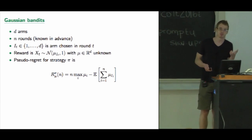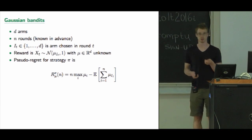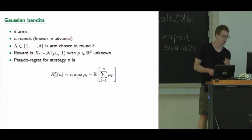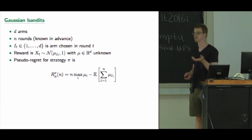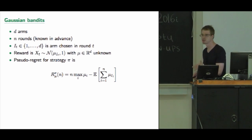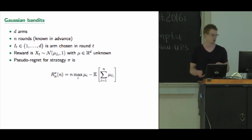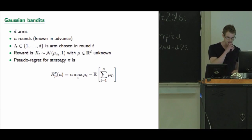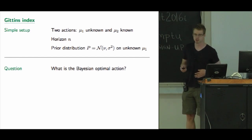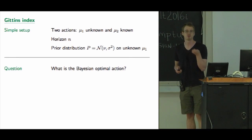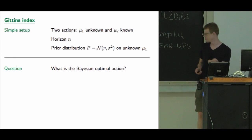The purpose of this talk is to analyze a really old algorithm, which is the Gittins index horizon algorithm — the finite horizon Gittins index, which is a Bayesian algorithm. This is a little bit like Dan's talk: we have a Bayesian algorithm and we want to make the frequentist regret small.